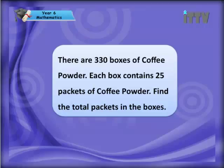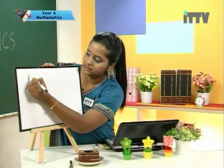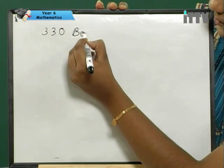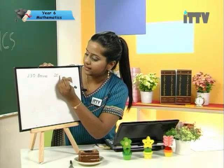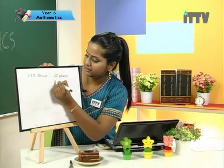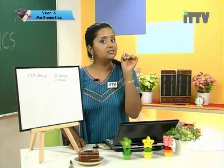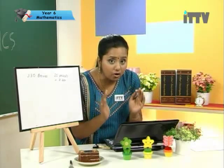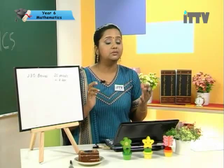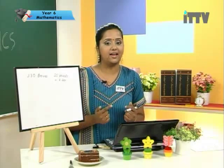There are 330 boxes of coffee powder. Each box contains 25 packets of coffee powder. Find the total number of packets in the boxes. So, how many boxes? 330 boxes. How many in each box? 25 packets. Now what do you need to do? We need to find the total packets of coffee powder in 330 boxes. The operation is multiplication.